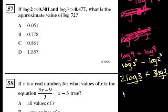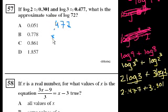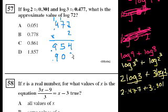We know what the log of 3 is and the log of 2. The log of 3 is 0.477, so we have 2 times 0.477 plus 3 times 0.301. So 0.477 times 2, that's 0.954. And 3 times 0.301, that's 0.903. If you add them together, it's going to be 1.857. Choice D.